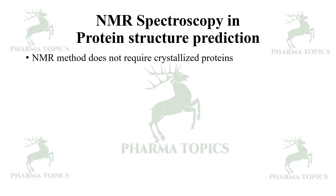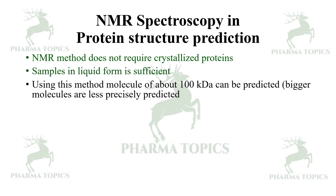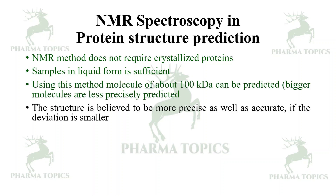NMR method does not require crystallized proteins — samples in liquid form are sufficient. Using this method, a molecule of about 100 kiloDaltons can be predicted. Bigger molecules are less precisely predicted. The structure is considered more precise and accurate if the deviation is smaller.